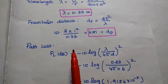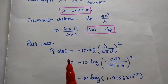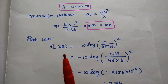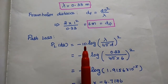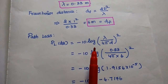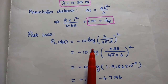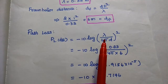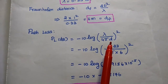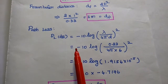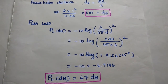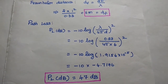Next, we find the path loss. Path loss in decibels is equal to minus 10 log of (λ / 4πd)². We substitute the lambda value and the Fraunhofer distance value into this formula to get the path loss value, which we obtain as 47 dB.